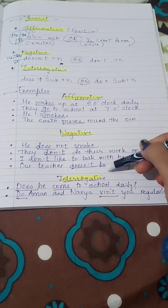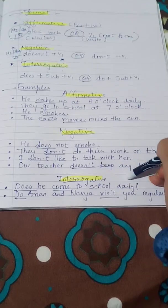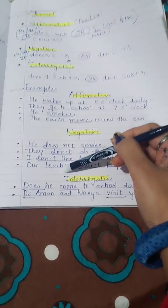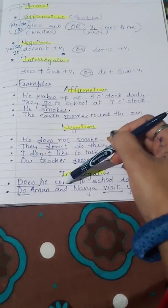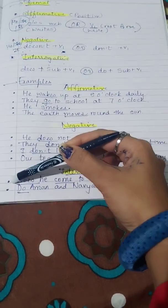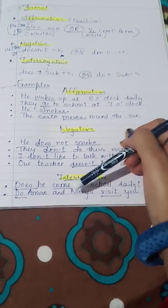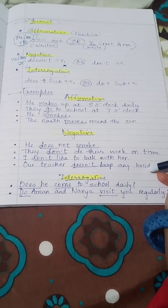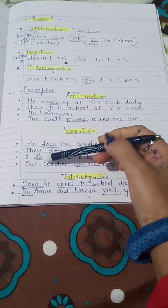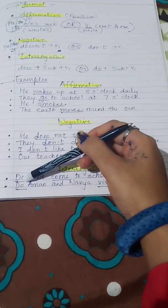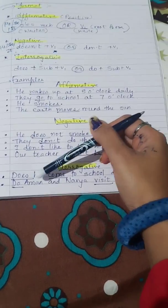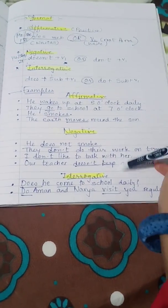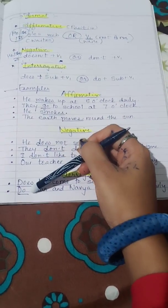Now for interrogative: 'Does he come to school daily?' — 'does' is used because the subject is 'he.' Also, you use 'come' (V1), not 'comes,' because 'does' is already there. Next: 'Do Aman and Navya visit you regularly?' — 'do' is used because Aman and Navya together means 'they' (plural), not third person singular.